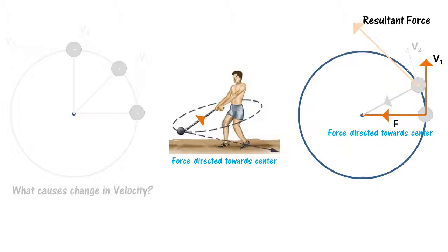In this new position, there is a force which is directed towards the center and the resultant force again changes the direction. This happens at all points in the circular orbit resulting in the circular motion.